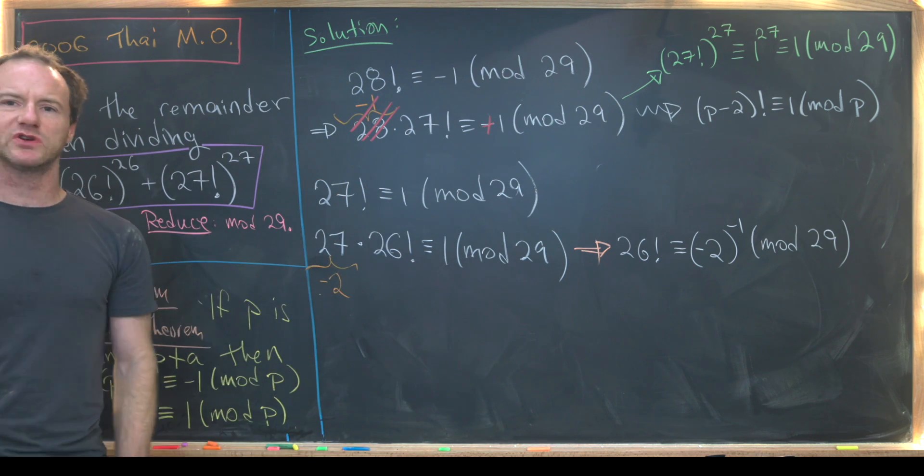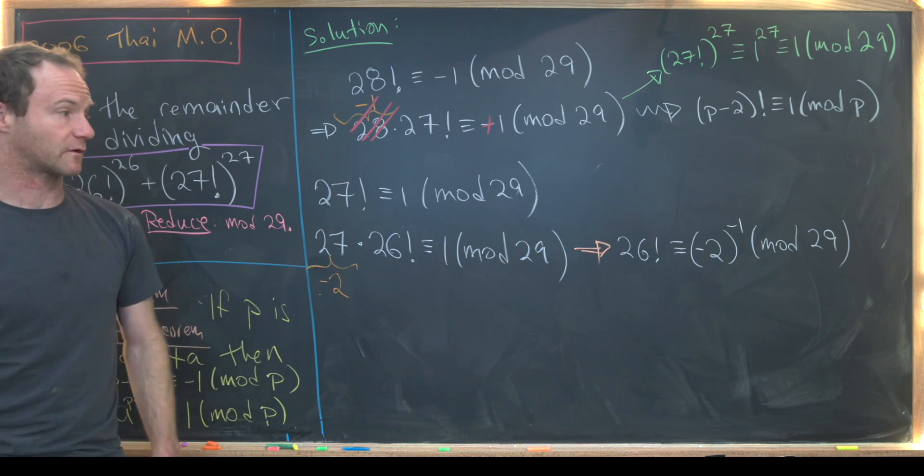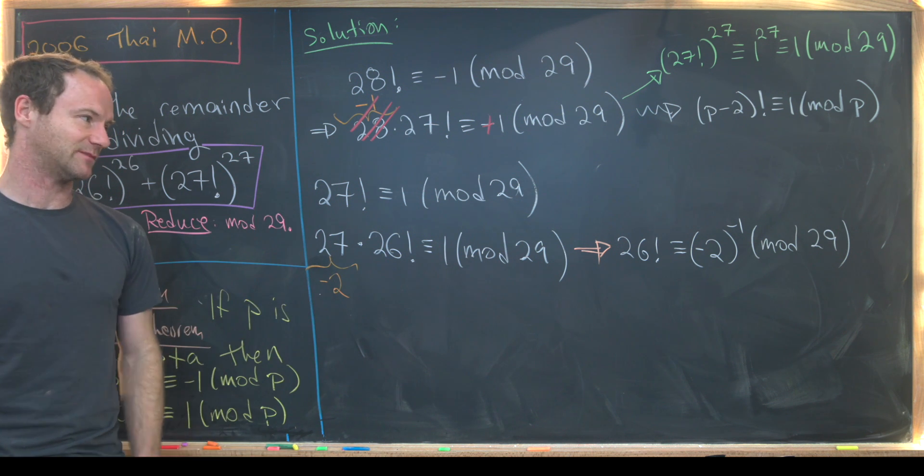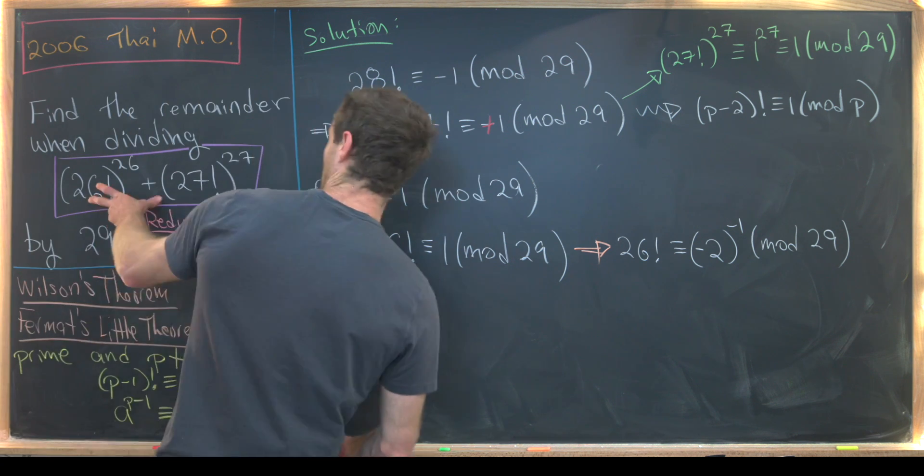You might think, well, maybe we should reduce this minus 2 inverse to something that's a little more familiar, like some number between 1 and 28. But we'll see that won't exactly be advantageous for us. So now let's move on to our main goal.